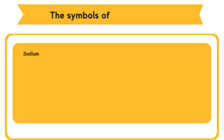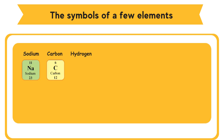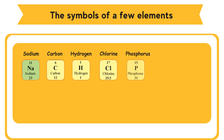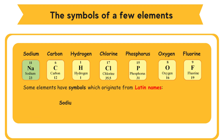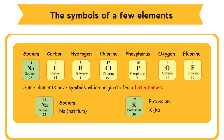The symbols of a few elements: sodium, carbon, hydrogen, chlorine, phosphorus, oxygen, fluorine. Each symbol consists of one or two letters. For elements with two-letter symbols, the first letter is always capitalized and the second is always lowercase. Some elements have symbols originating from Latin names — for example, sodium has symbol Na (from Natrium) and potassium has symbol K (from Kalium).